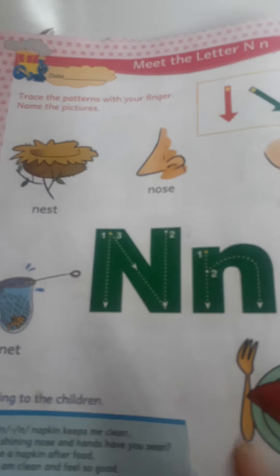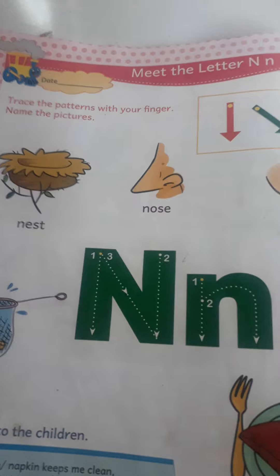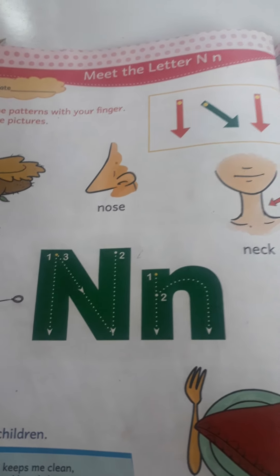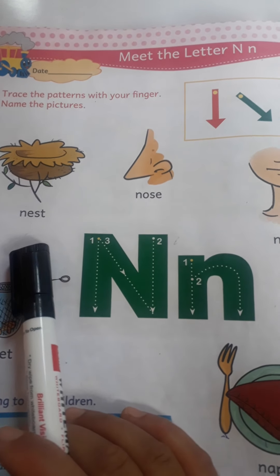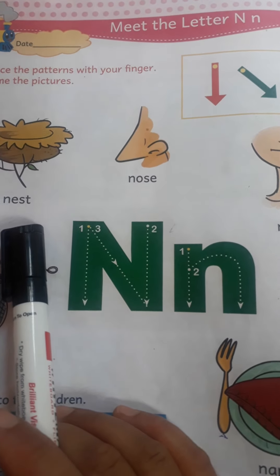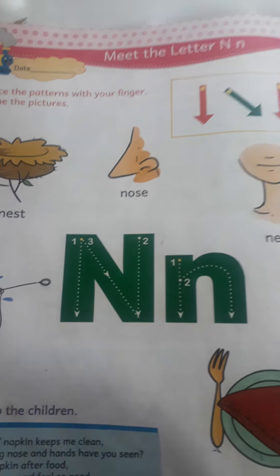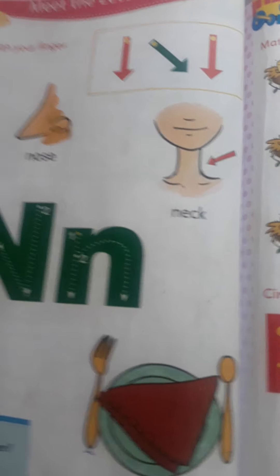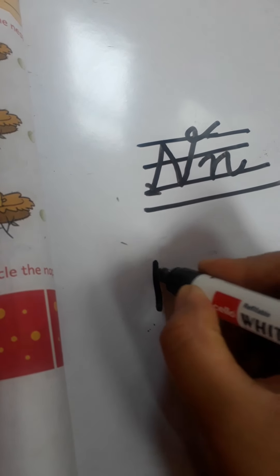Look at this book properly. Here are five words that begin with the letter N. The first word is 'nest.' The spelling of nest is — look here, I will write it: N...